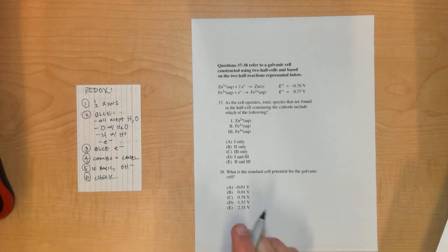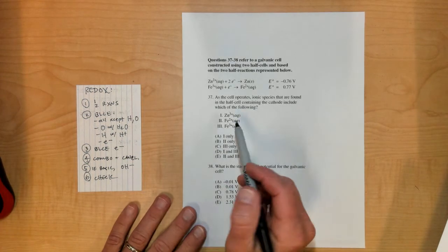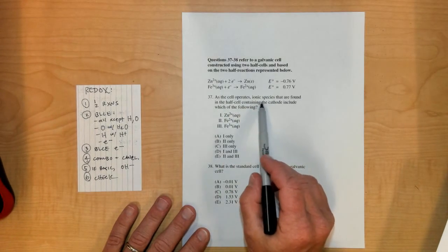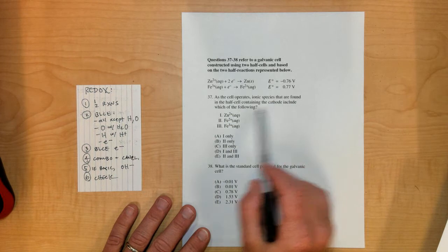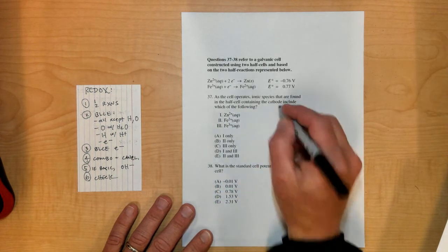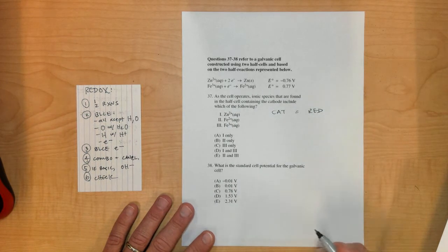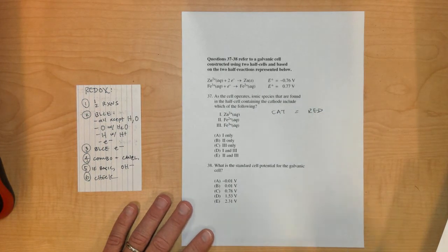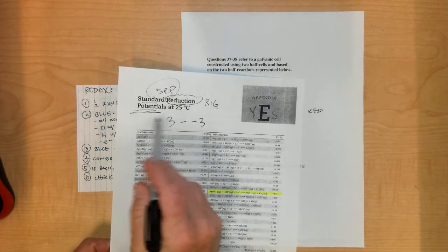This is starting with the next part of the practice test that I know is tested in this particular pandemic year. This starts with problem number 37. It says, as the cell operates, ionic species that are found in the half cell containing the cathode include which of the following?